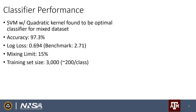Our classifier is currently using a support vector machine with a quadratic kernel, which had the best performance. Its accuracy is 97.3% with a log loss of 0.694 for a 15-class classifier — well below the benchmark of 2.71. We found a mixing limit of 15%: if one constituent is under 15%, it becomes much harder to identify the sample as a mixed plutonium class. A good training data set size was 3,000 samples, roughly 200 data points per class — large enough for accuracy and small enough to train quickly.